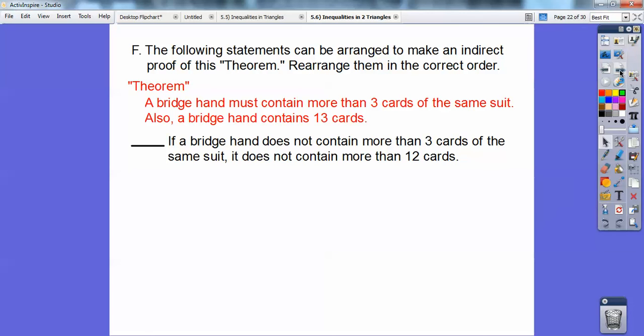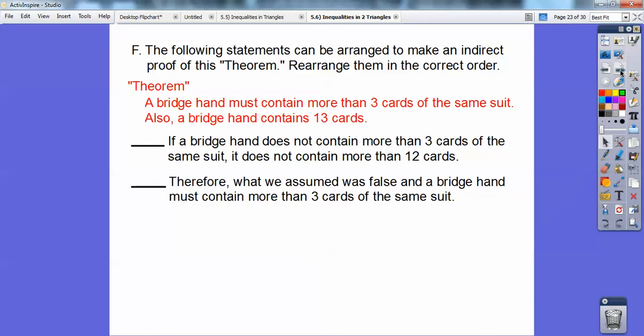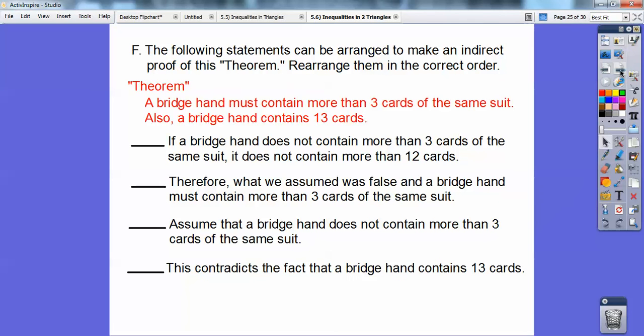We're going to assume temporarily. The theorem, that's my prove part right there. We want to prove that a bridge hand must contain more than three cards of the same suit. If a bridge hand does not contain more than three cards of the same suit, it does not contain more than 12 cards. And you're thinking, I'm looking for assume temporarily. So I know it's not that one. There's the first one. Assume that a bridge hand does not contain more than three cards of the same suit. That's my first one right there. Let's put a one right there.